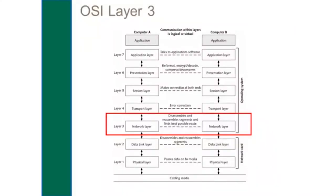At layer 3, the network layer, we see equipment like routers. The key function is creating logical addresses to determine the best way to reach a different location. A good analogy is a postal code — its job is to help get close to the destination. At the network layer, we segment the internet and local area networks into logical addresses, and routers look at the destination network to forward packets efficiently.